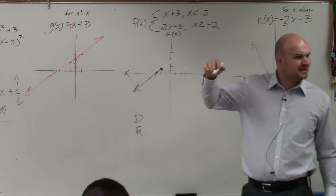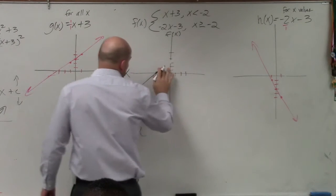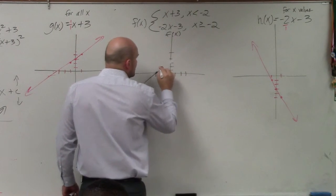Now, it's less than negative 2, not greater, not equal to. So it's an open dot.